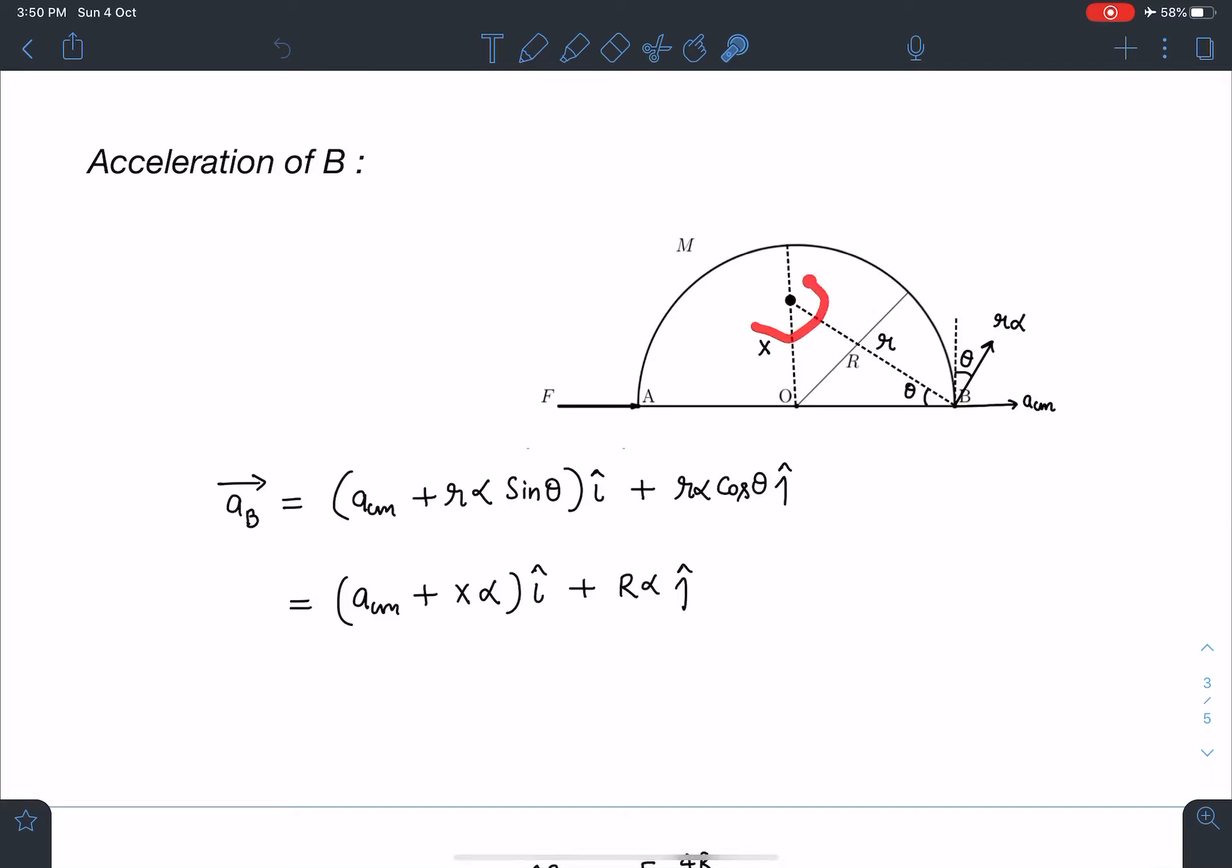Here, due to rotation it's going to rotate like this with alpha. Let's say this distance is small r. Small r we can write as root of x squared plus capital R squared. At this point, the acceleration is going to be small r alpha. Tangential acceleration is going to be small r alpha.